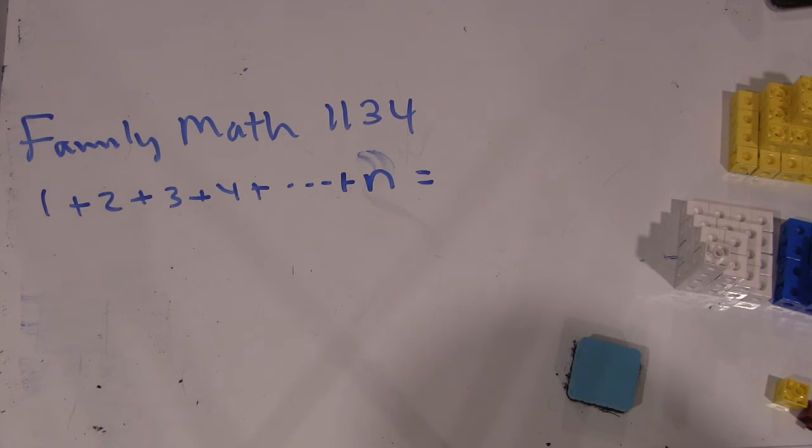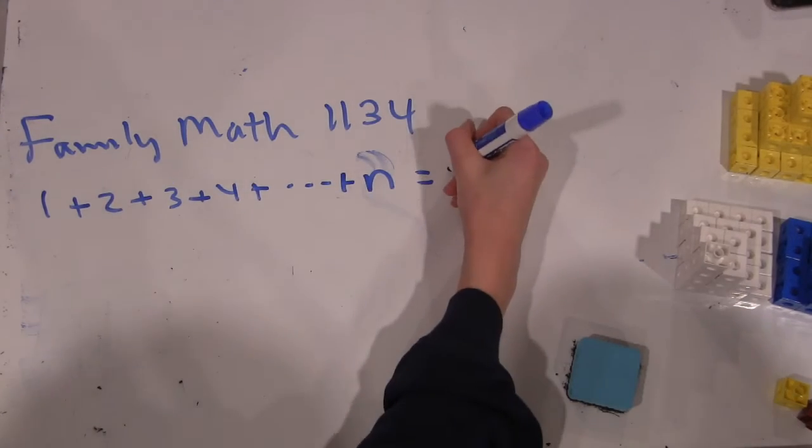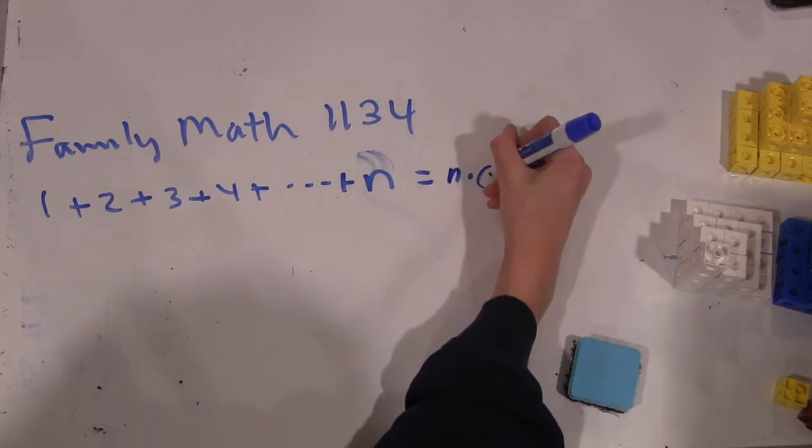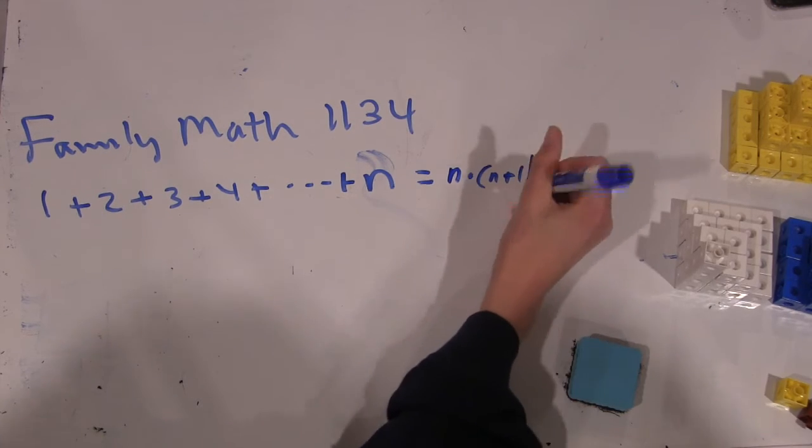But the first thing we're going to do in this project of looking at some of these series is look at this one: 1 plus 2 plus 3 plus 4 plus dot dot dot plus n, up to some positive integer n. Do you remember what this sum equals? I believe it is equal to n times n plus 1 over 2.